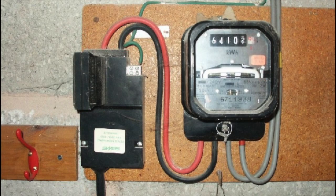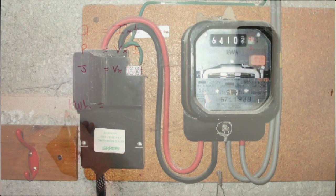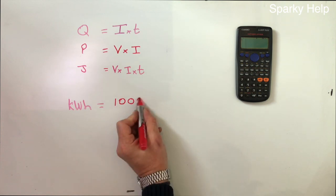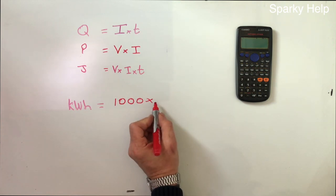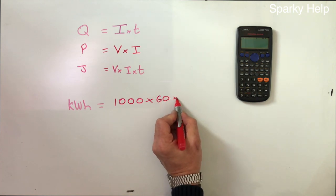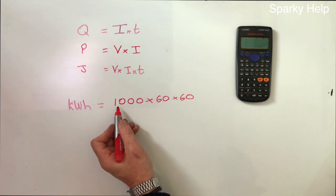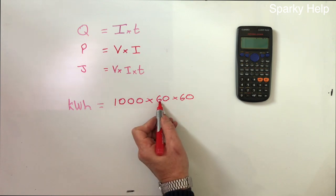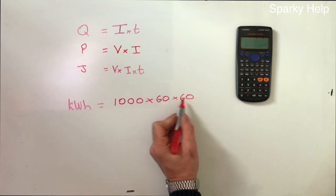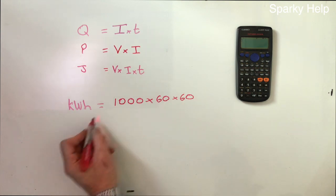We tend to use kilowatt hours. So that kilo being 1000, so kilowatts, that's 1000 watts in hours. So there are 60 minutes in an hour and there are 60 seconds in a minute. So if we do 1000 times 60 times 60, so 60 times 60 is 3600 times 1000, that gives us joules.